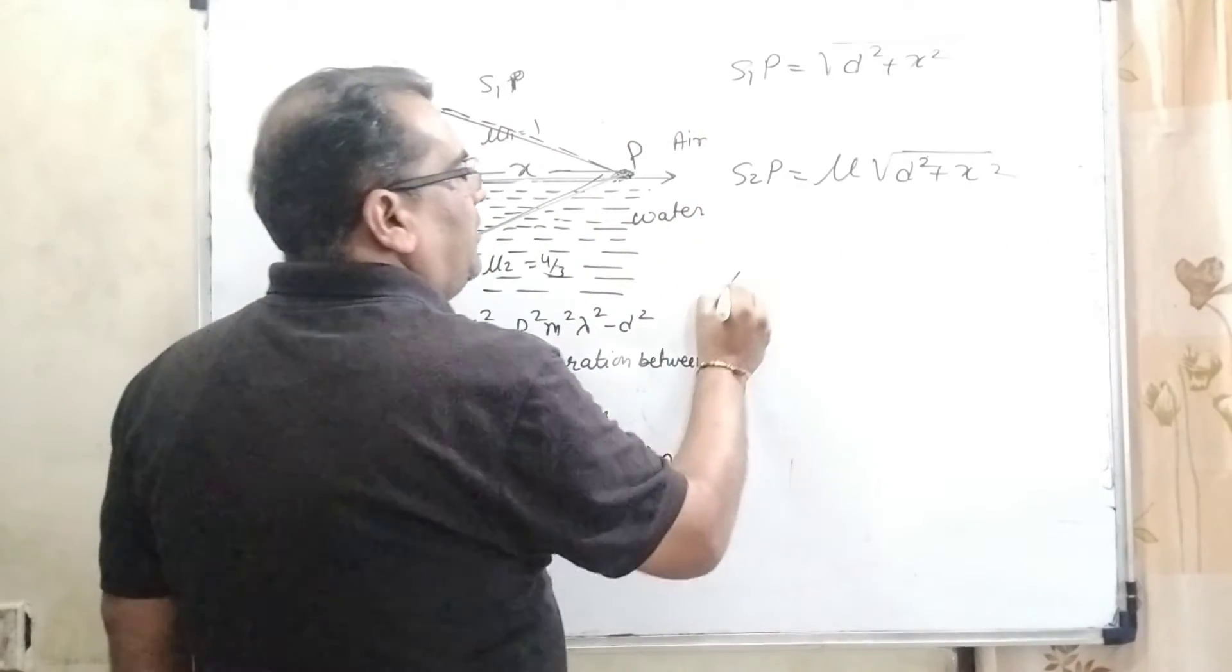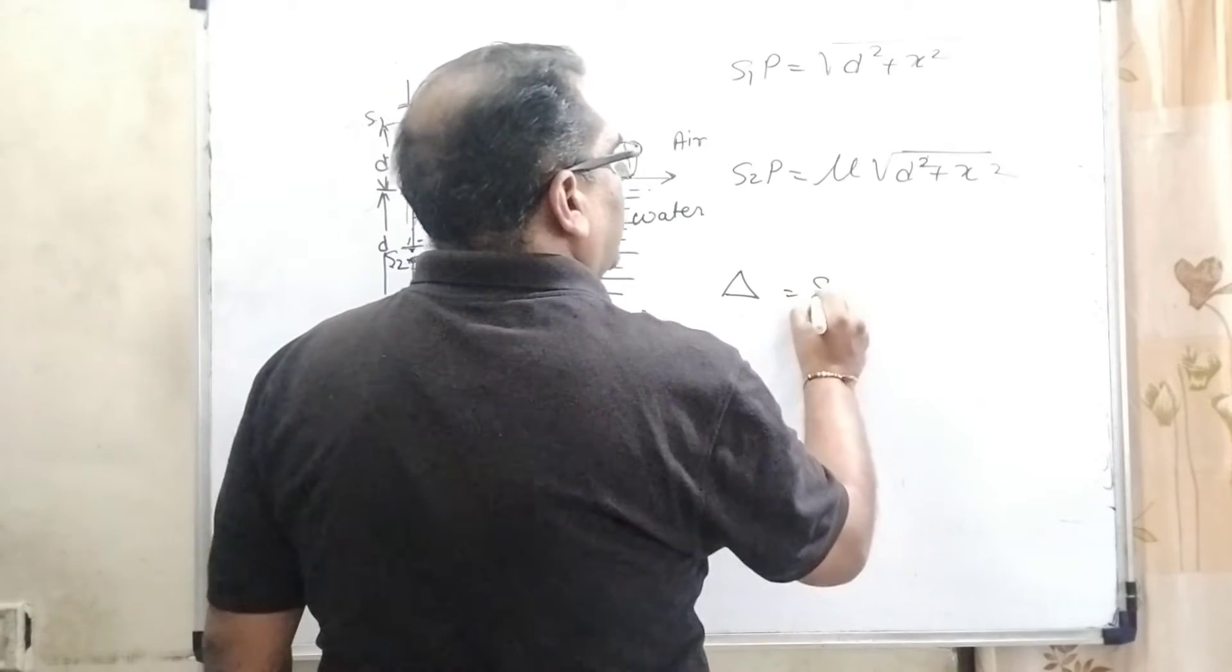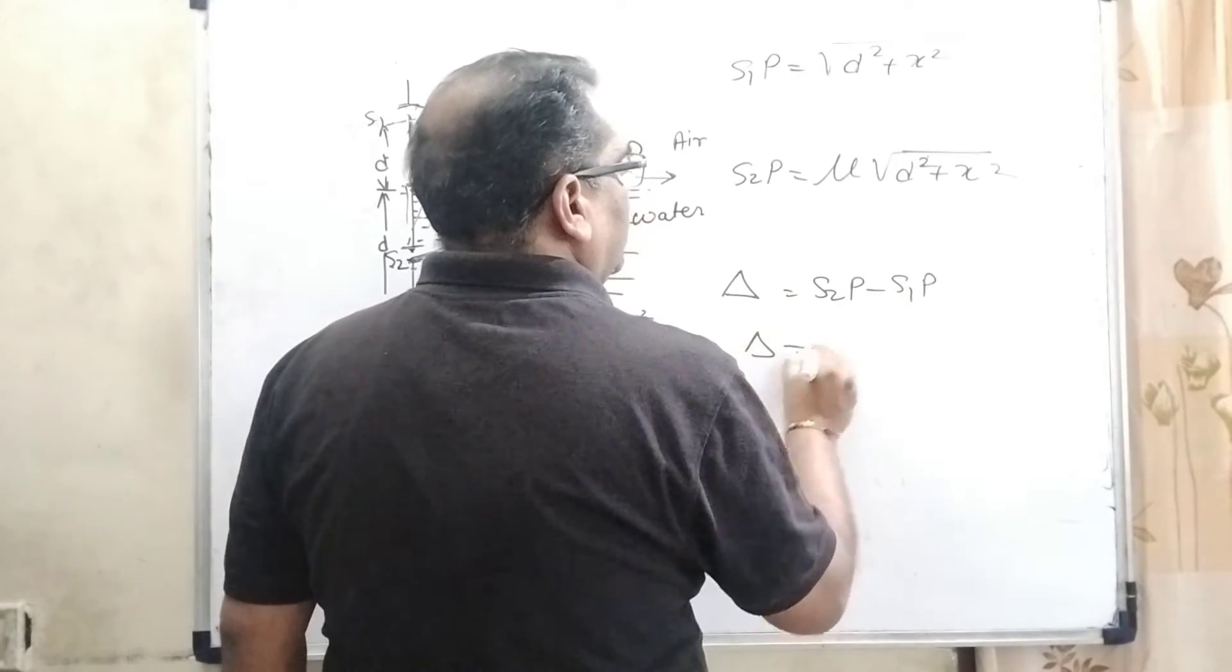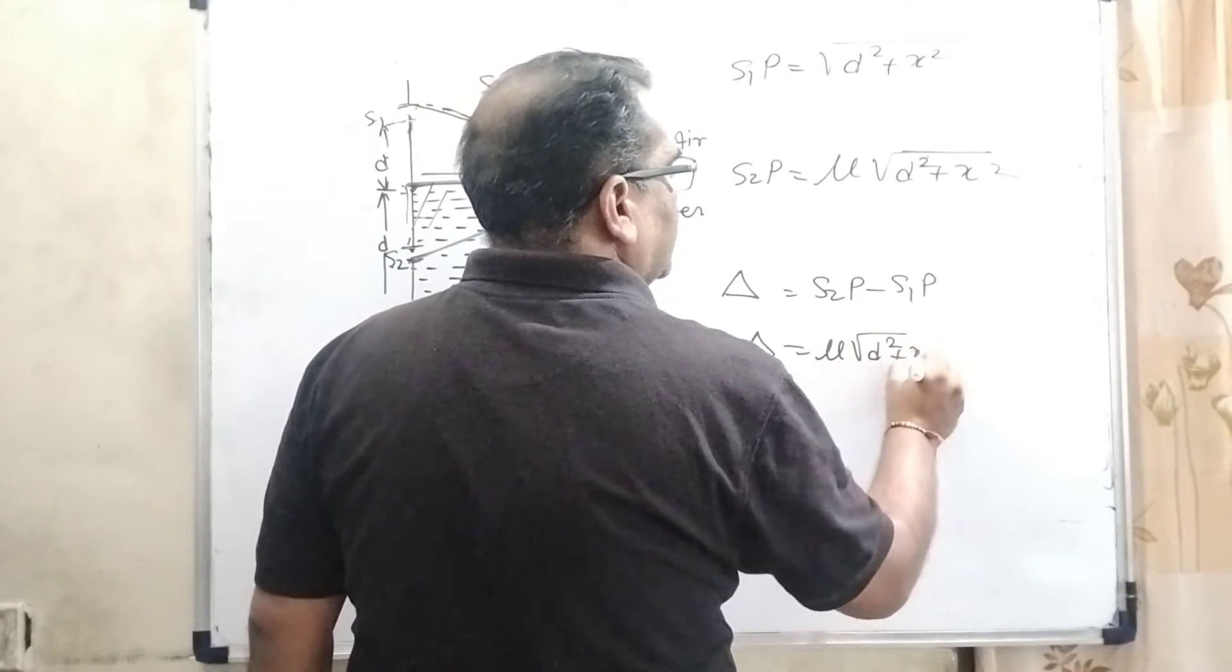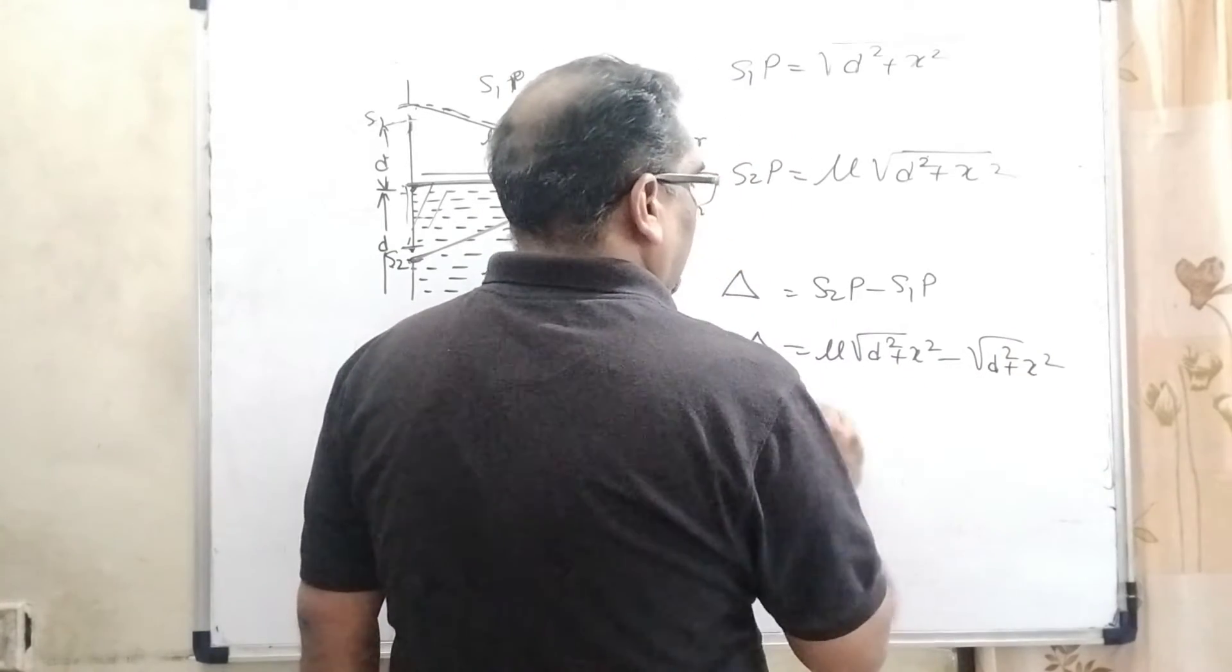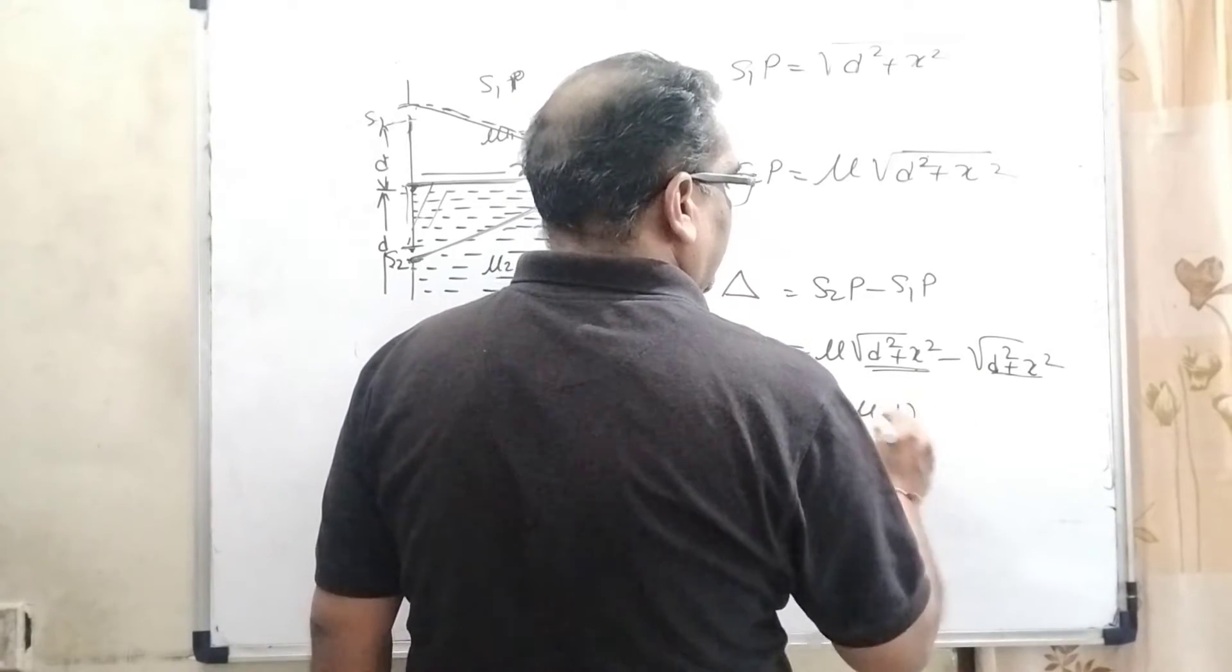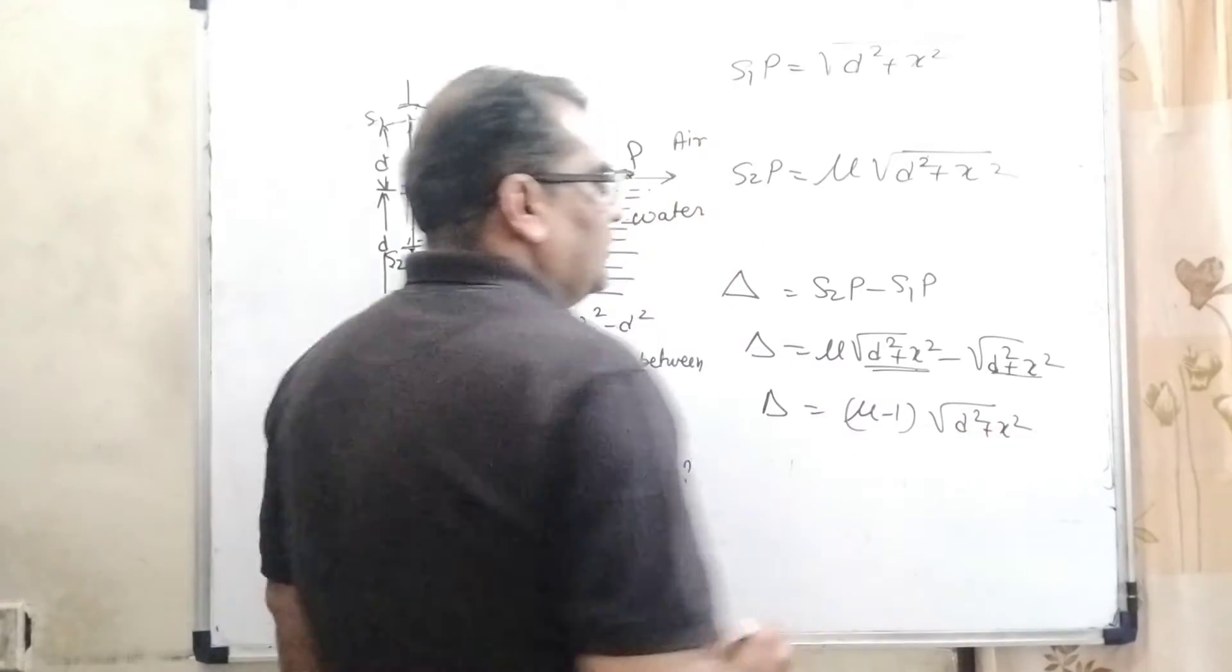So S2P, we apply the same Pythagoras theorem but multiply by μ: μ√(d² + x²). As we know, the path difference equals S2P minus S1P. Substituting these values: μ√(d² + x²) - √(d² + x²). This becomes (μ - 1)√(d² + x²).